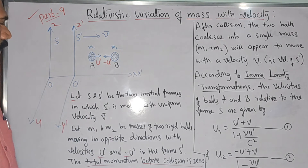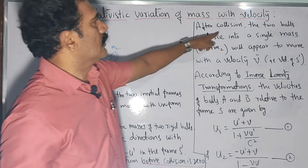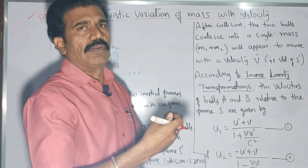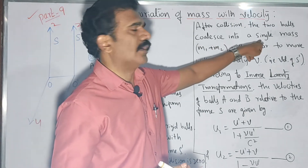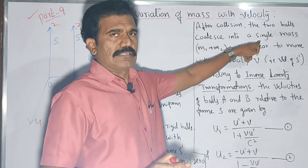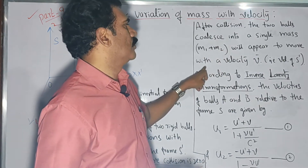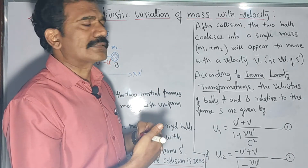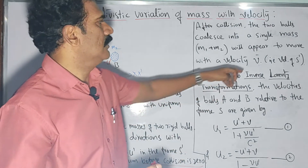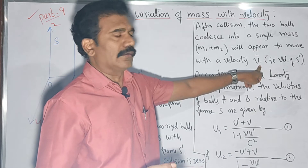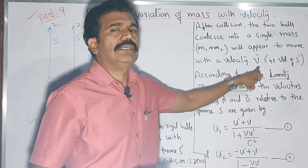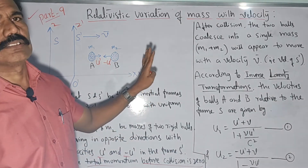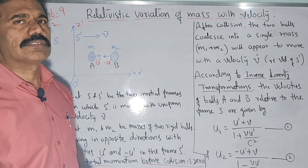After collision the two balls coalesce into a single mass — coalesce means the two bodies merge into each other — giving total mass M1+M2. That coalesced mass will appear to move with velocity V̄, which is the velocity of frame S'. So the coalesced body moves with velocity V̄ with respect to S. With this concept, we will proceed with the equations in the special theory of relativity using the inverse Lorentz transformations.